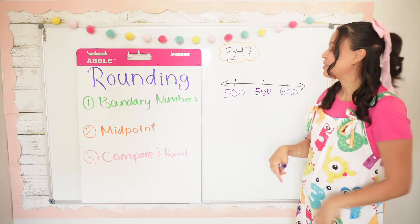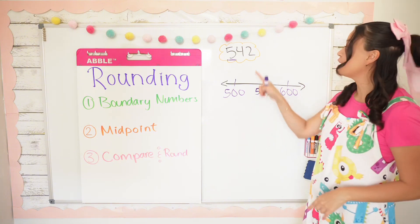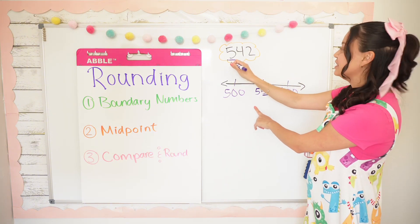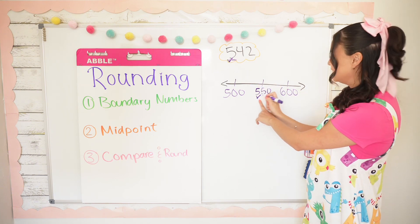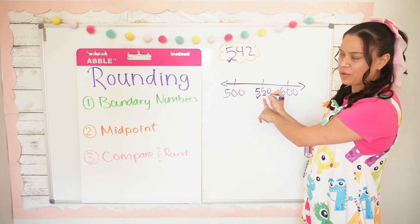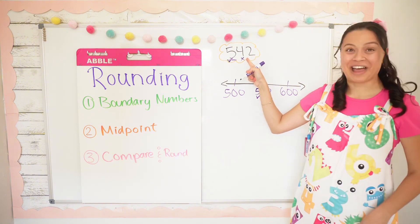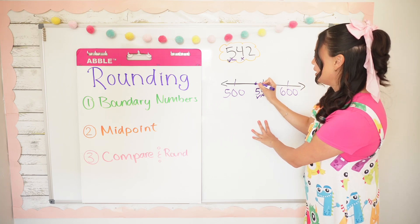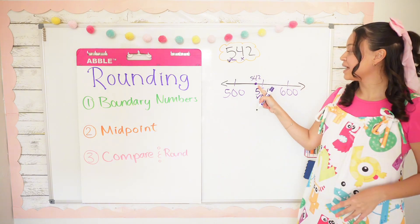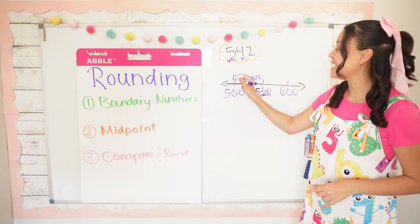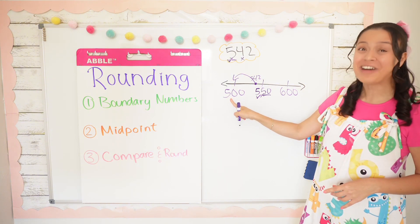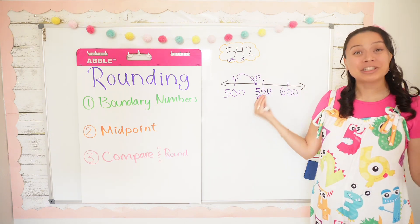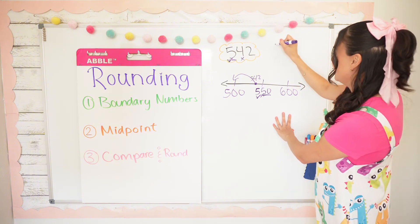Step three: compare and round. We're going to compare our number with the midpoint. In the hundreds place, is 500 equivalent to 500? Yes. What about four tens and five tens — is that equivalent? No. Four tens is less than five tens, so I'm going to plot 542 right here, and because of this we're going to round down because 542 is closer to 500 than it is to 600. So 542 rounded to the nearest 100 is 500.